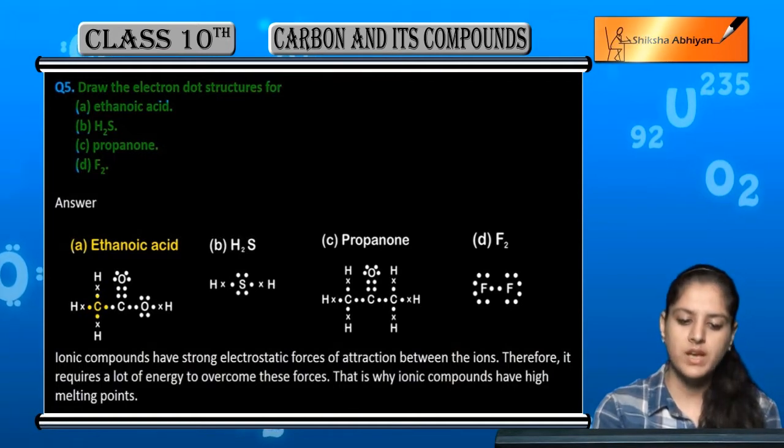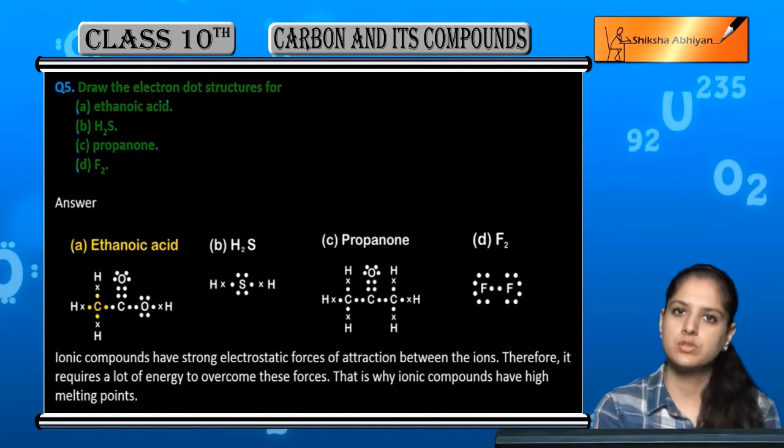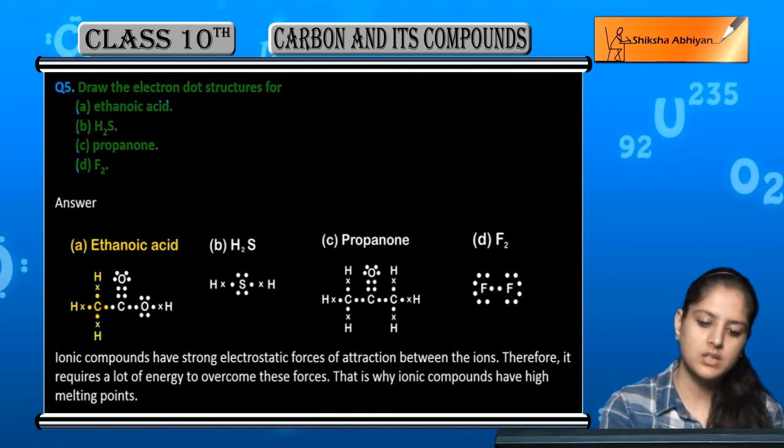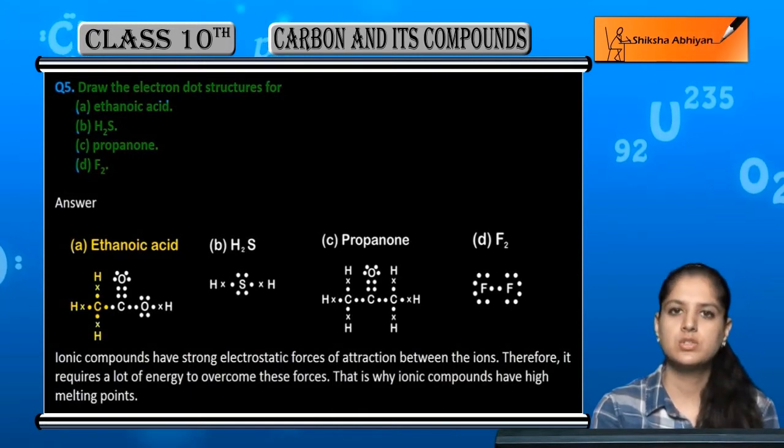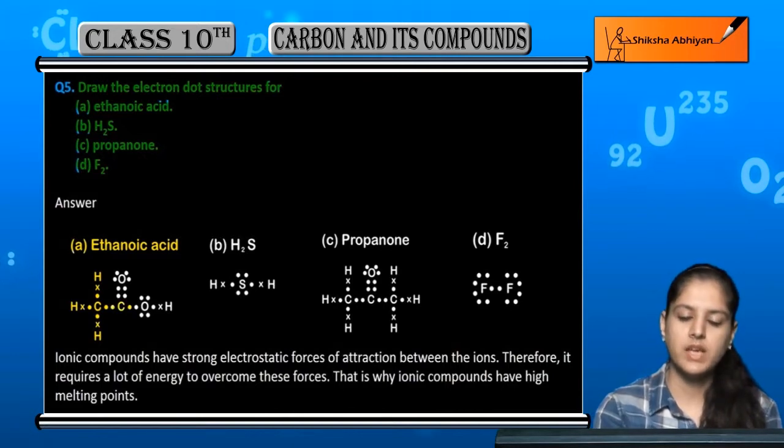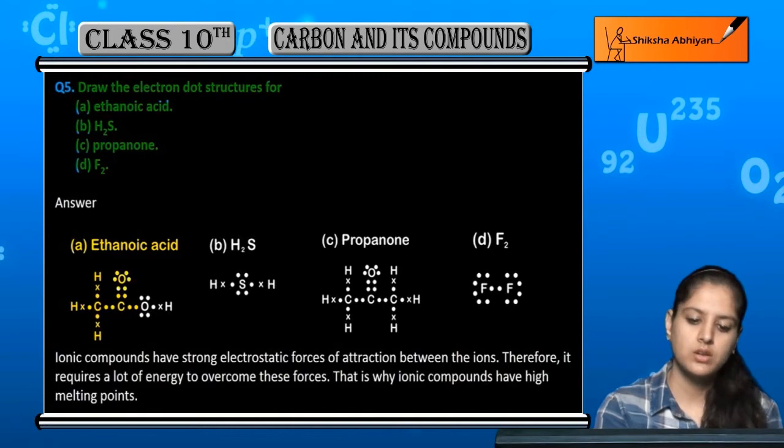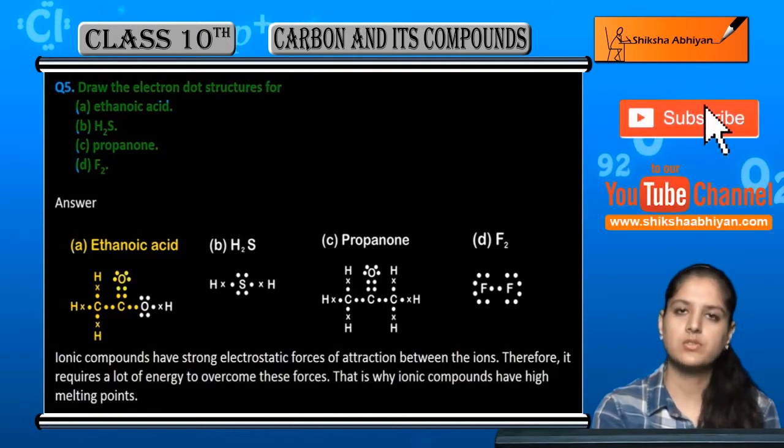we have 4 valence electrons to draw and 3H with 1 electron. Next, carbon has 4 electrons and oxygen has 6 electrons.